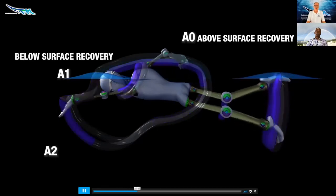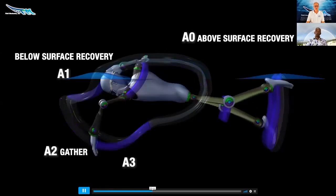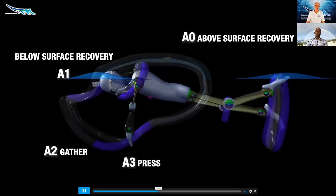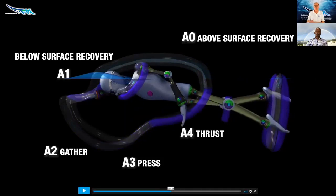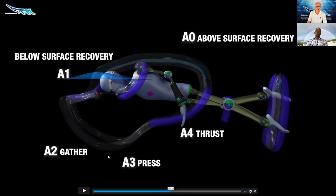Then down here we're going to go into A2, which is what we call the gather. We're gathering the pressure field. A3, where you're pushing on the pressure, we call it the press. And then A4, which is the thrust where you're pushing off of that pressure field. And Dr. Prins has some amazing insight as to what's going on in these sections, and so we're going to get his expertise today on that.